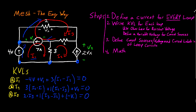The next step is to define the current sources in terms of the loop currents. For the 7A source, we write that 7 equals the current going in the same direction minus the current going in the opposite direction. I3 moves in the same direction as the 7A source, so we write 7 = I3 minus I1. For the dependent 2Vx source, only I2 is present and it moves in the opposite direction of 2Vx, so we write 2Vx = negative I2.